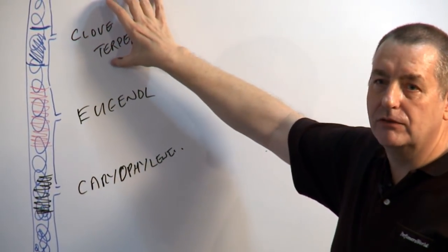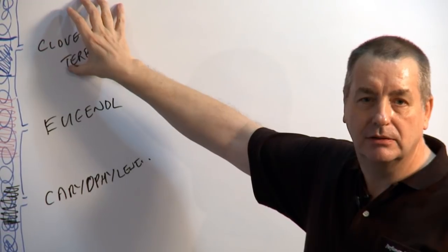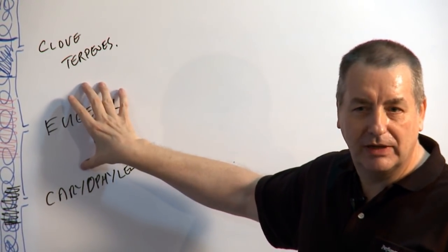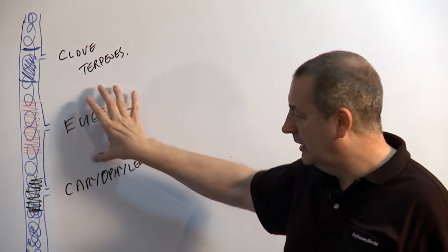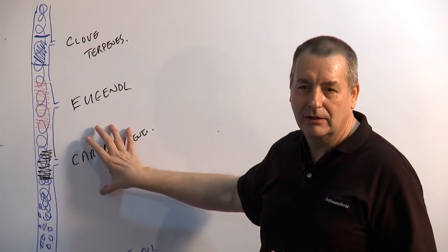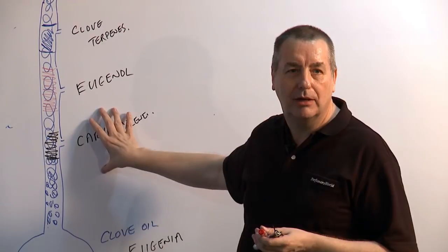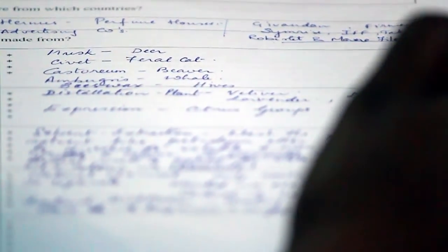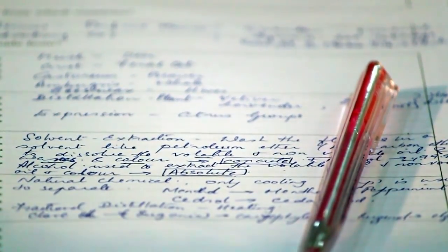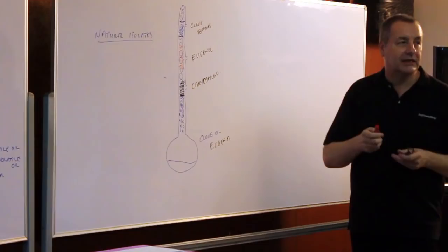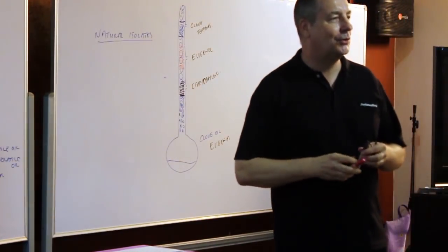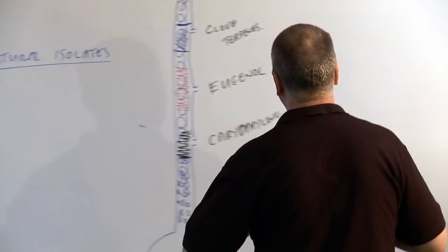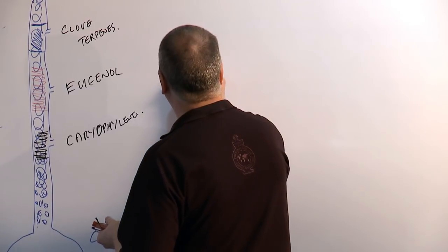Likewise here, with the clove terpenes, we get freshness. From the Eugenol, we get the typical clovey character. And then from the caryophyllene, we get like a woody character. That woodiness that you get from the clove buds when you smell them. Like a dusty sort of church pew sort of smell. So fractional distillation is used for our clove.